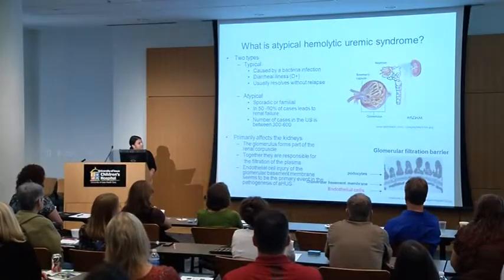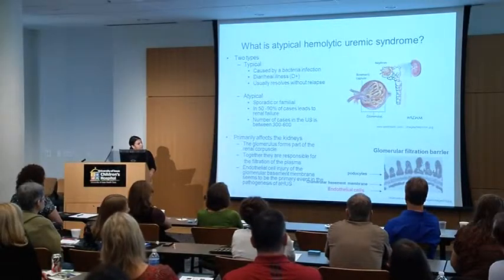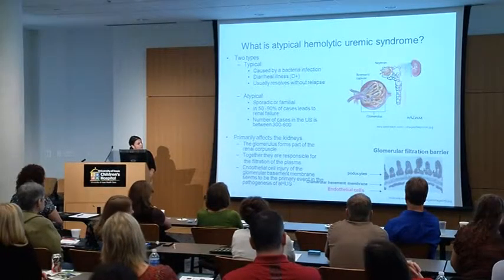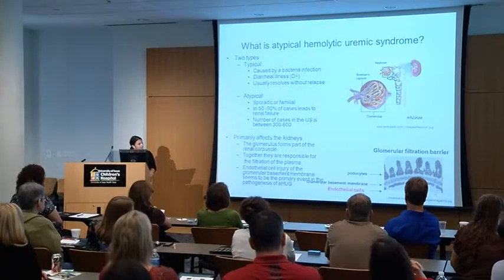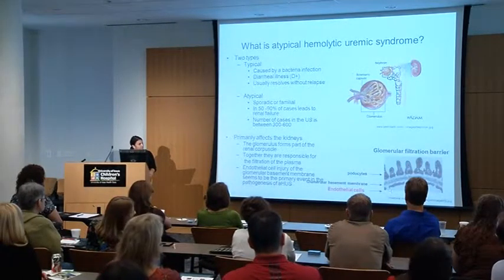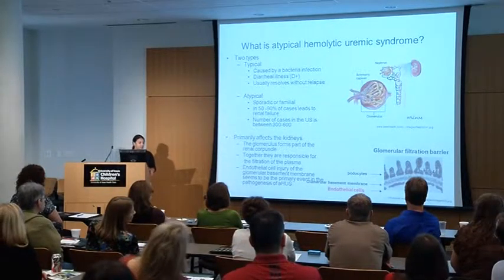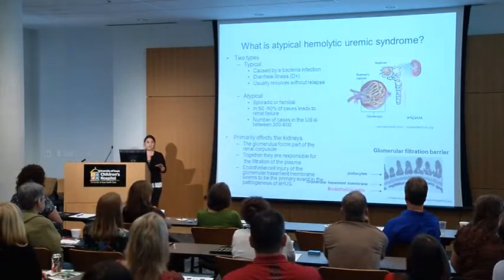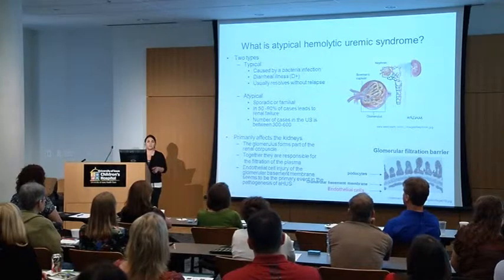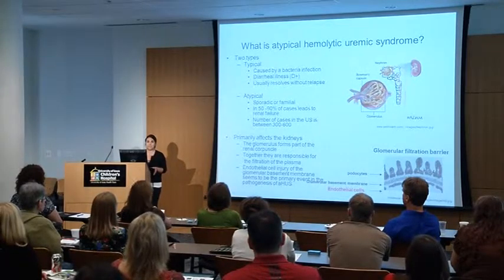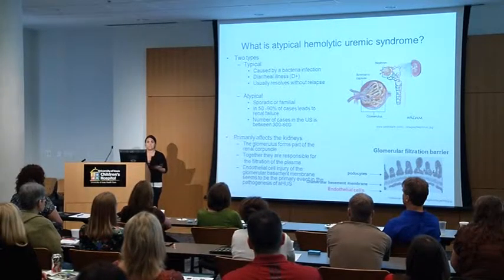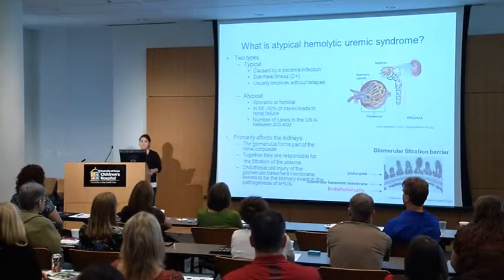Here is the glomerular filtration barrier. It's actually the damage of these endothelial cells that get attacked by complement that seems to be the primary event in the pathogenesis of the entire disease. This is where it all starts.